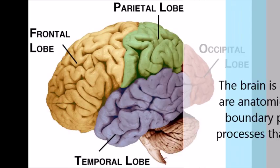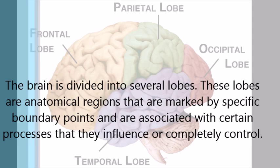The brain is divided into several lobes. These lobes are anatomical regions that are marked by specific boundary points and are associated with certain processes that they influence or completely control.